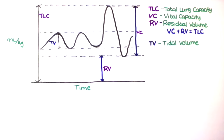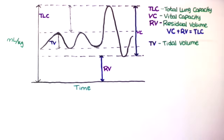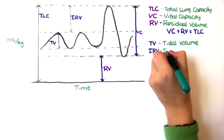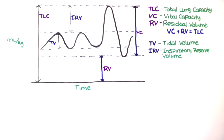So as you sit there breathing normally in and out, that's your tidal volume. It is 7–8% of the total lung capacity. The inspiratory reserve volume is the amount of gas that an individual can inhale above a tidal inspiration.